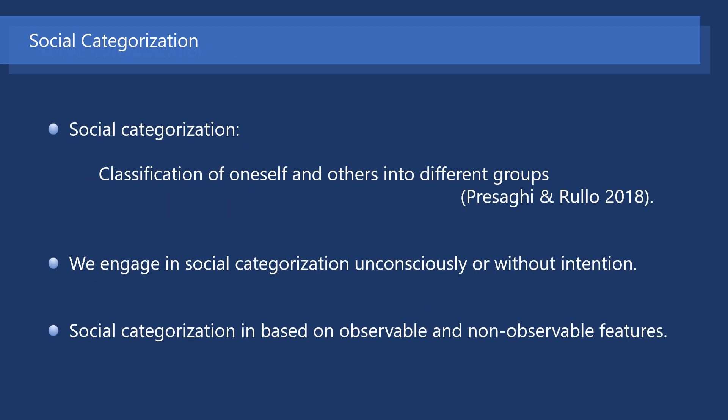Social categorization refers to the categorization of people. As social categorization, we categorize ourselves and others into different groups. In other words, social categorization is to classify oneself and others. We engage in social categorization unconsciously or without intention, based on attributes shared by ourselves and those different from others. These attributes can be demographic characteristics, physical characteristics, personality, abilities, and other various features. That is, people categorize themselves and others based on both observable and non-observable features.